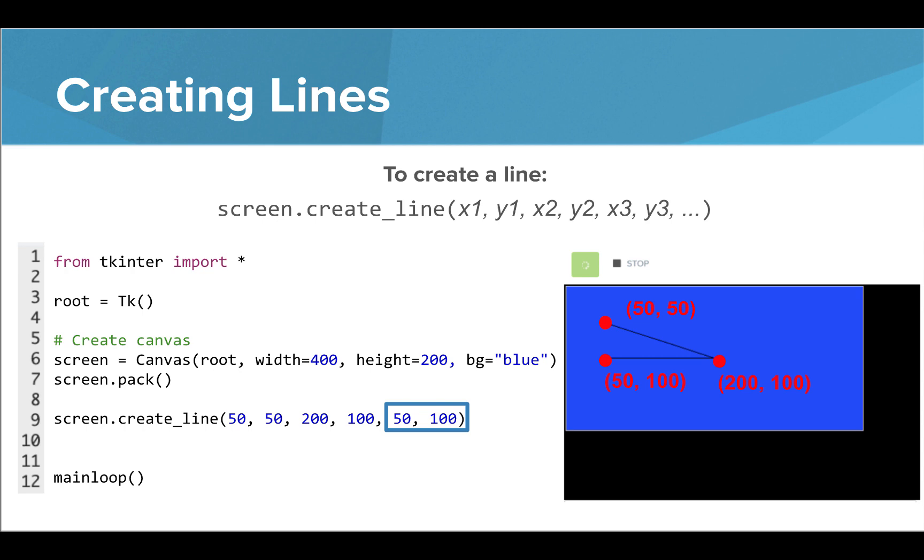Now we can actually note as many points as we want inside our create_line function and the points will just be drawn one after another. Here we've added the point 50, 100 and if we wanted to close the shape, we would simply add the first point to the end of our list. Here we've added 50, 50 to close our triangle.